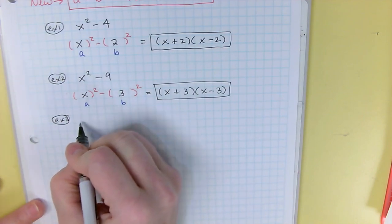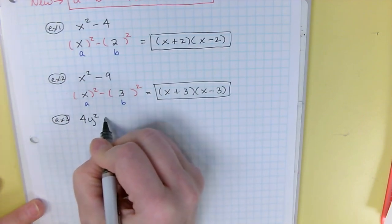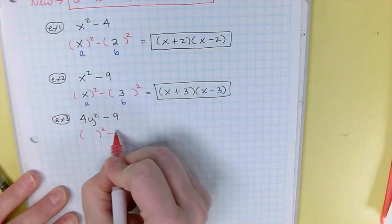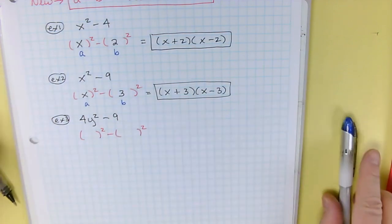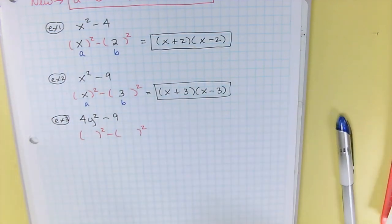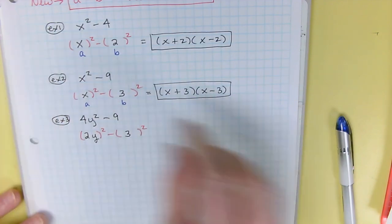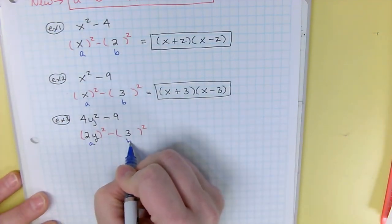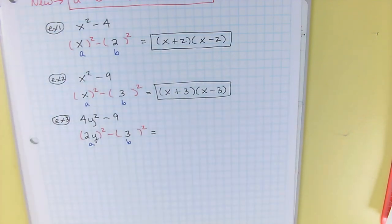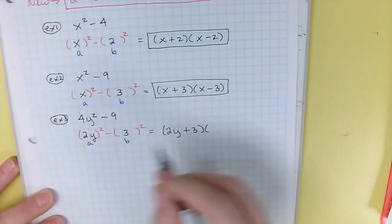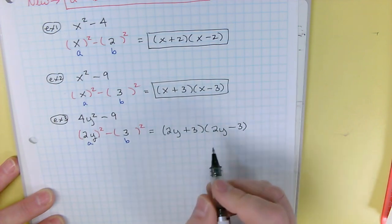A little more complicated: 4Y squared minus 9. Can you write it as something squared minus something squared? 4 is 2 times 2, so that's 2 squared. Y squared is Y times Y, so I can write that as a 2Y squared. 9 is 3 squared. So my A is 2Y, my B is 3. Using the pattern: (2Y plus 3)(2Y minus 3).